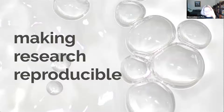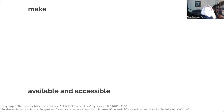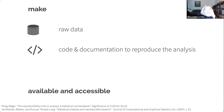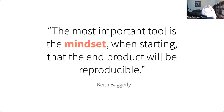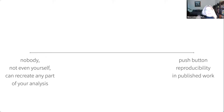So how do we go about trying to avoid this sort of mishap? We want to make our raw data available, we want to make our code and documentation to reproduce the analysis available, and we want to make the specifications of our computational environment available. Being able to achieve these three will bring us closer to reproducible open science. I have a quote here from Keith Baggerly, who works on reproducibility problems: 'The most important tool is the mindset when starting that the end product will be reproducible.'